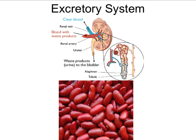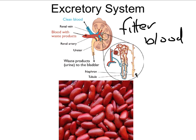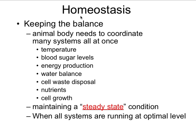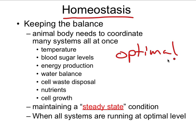The excretory system deals with kidneys — filtering blood to keep the good stuff in our body and get rid of the bad stuff. This relates to the concept of homeostasis: keeping everything at its optimal level. You're not too hot, not too cold, don't have too much or too little blood sugar or energy. It's our steady state — just right in the middle.